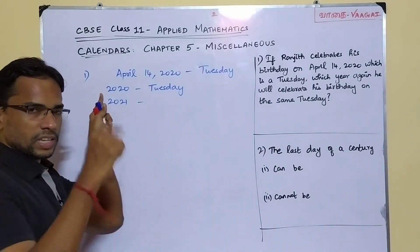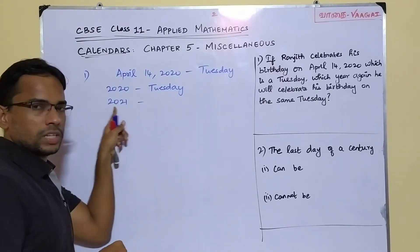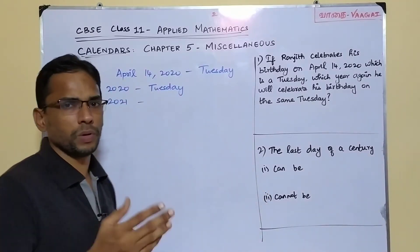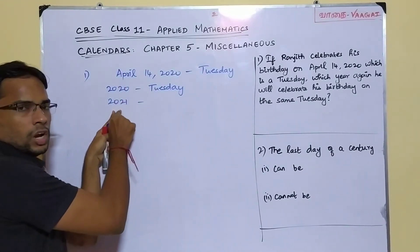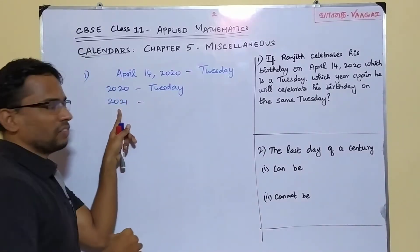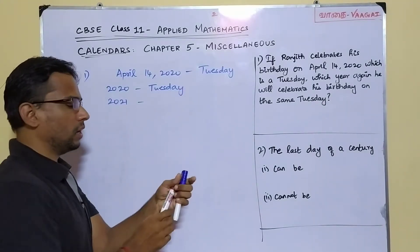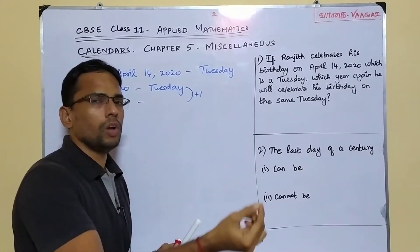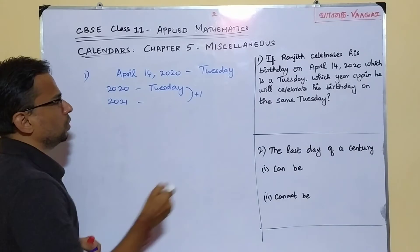Traveling from 2020's April to 2021's April, we will be crossing 2021's February only, and 2021 is an ordinary year, so February will have only 28 days. In that case, there is only one odd day — so we do plus one. Tuesday plus one gives us Wednesday. So in 2021, his birthday is on a Wednesday.